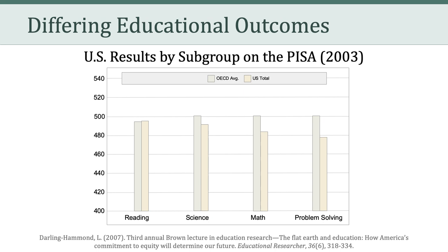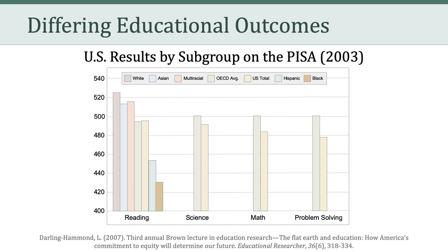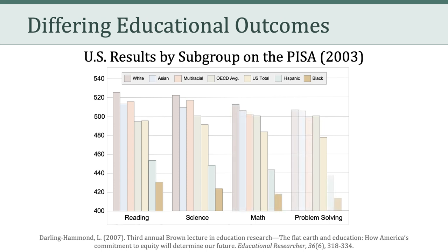Here we can see that the U.S. is pretty close to average in reading, a little bit lower in science, a little bit lower in math, and considerably lower in problem solving. But what's important when thinking about educational equity and equality is thinking about how different subgroups within the United States fare in these four domains: reading, science, math, and problem solving. Here we can see how whites, Asians, and multiracial subgroups perform in reading — notice that it's higher than the OECD average, as well as the U.S. total. Here, we see how Hispanics and blacks perform on reading. We see a similar pattern in science, as we do with math, and as we do with problem solving.